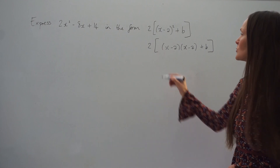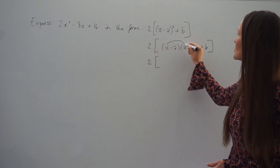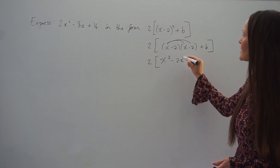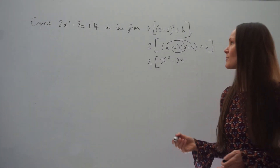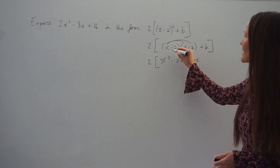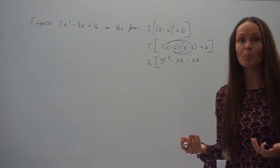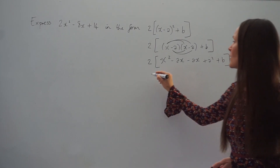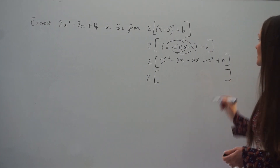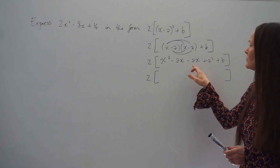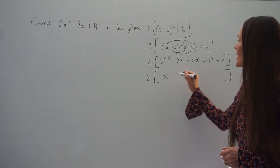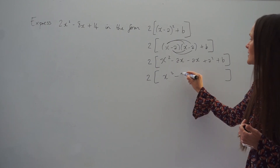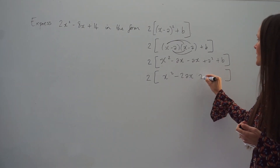Now we can start multiplying out the brackets. x multiplied by x is x squared. x multiplied by negative a is negative ax. Negative a multiplied by x is the same thing, negative ax. And then negative a multiplied by negative a is positive a squared. Don't forget plus b. We can simplify what's inside the square brackets because we have two x terms to add together. So x squared stays the same, negative ax take away another ax is negative 2ax, and a squared plus b remains the same.